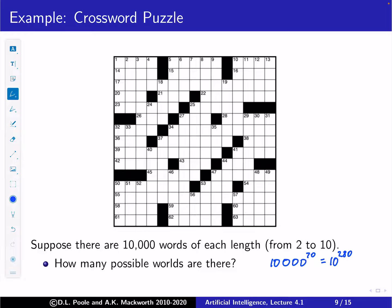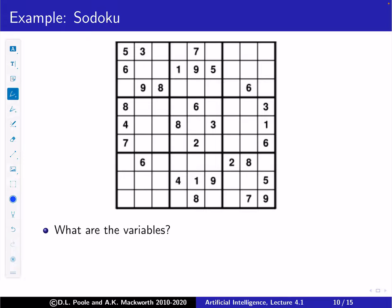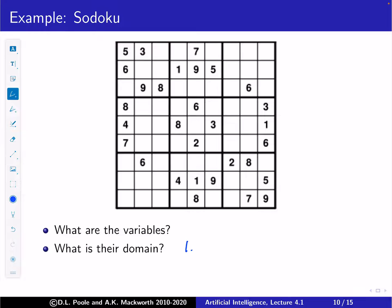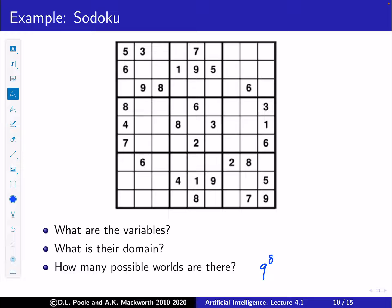Here's a Sudoku example. The variables are each square in the grid, and the domain is {1, 2, ..., 9}. The number of possible worlds is nine to the 81, which is another enormous number — comparable to the number of atoms in the universe. So even for Sudoku we're dealing with very large search spaces.